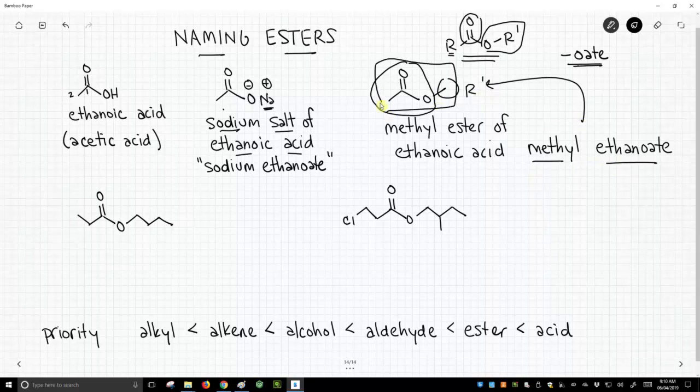So let's try it on a different group. So anyway, the step is we name this R prime group off the oxygen, we stick that in the front. In this case, it's a methyl. And then we name the acid, but we put an oate on the end, ethanoate, methyl ethanoate.